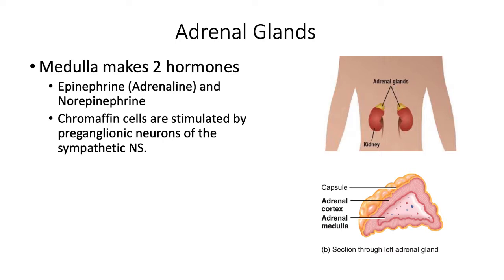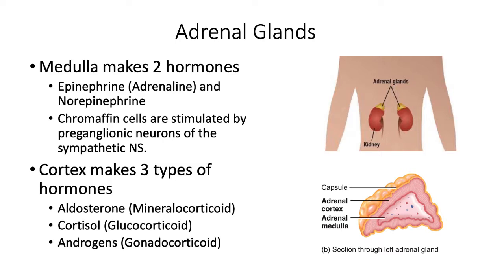The outer layer, or the adrenal cortex, makes three different types of hormones. You will be learning about cortisol in the next video about the hypothalamus and pituitary gland. You will learn more about the sex hormones, androgens, in the reproductive system. And today we're going to be talking about aldosterone.